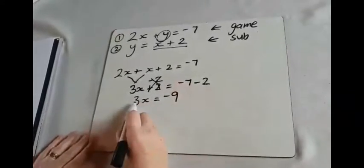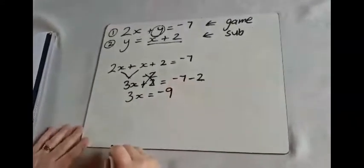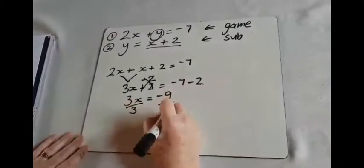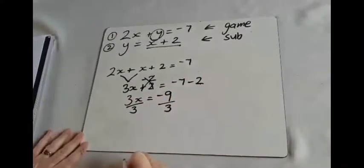So now this is 3 multiplied by x. So to get rid of that, we need to divide by 3. And we need to do it to both sides of the equation to balance out.